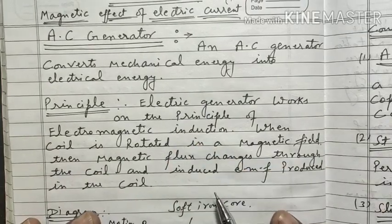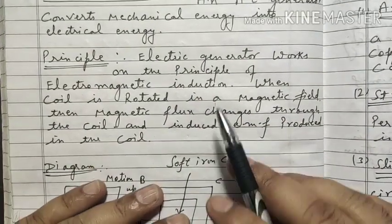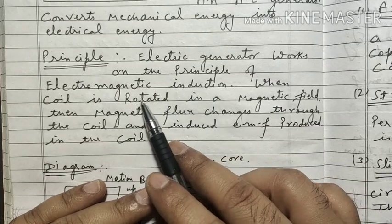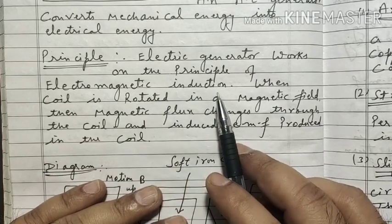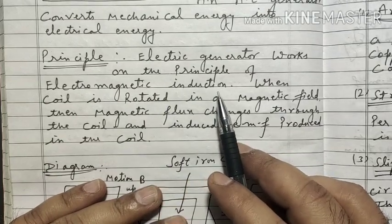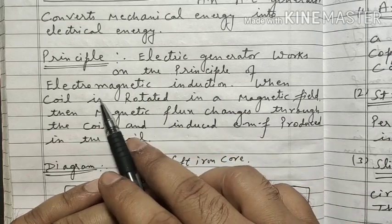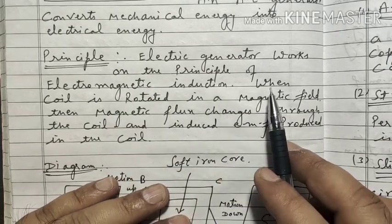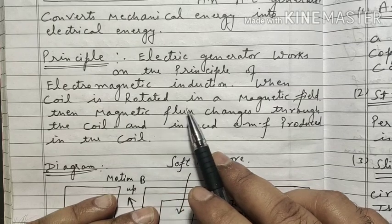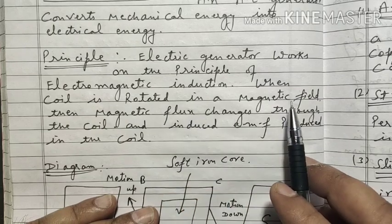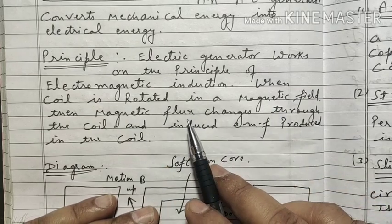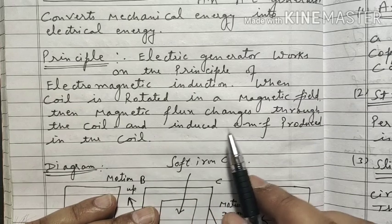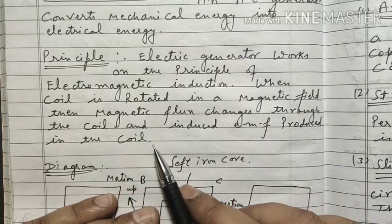Next is the principle. Electric generator works on the principle of electromagnetic induction. You have to remember: the principle is electromagnetic induction. When the coil is rotated in a magnetic field, the magnetic flux changes through the coil and induced EMF is produced in the coil.